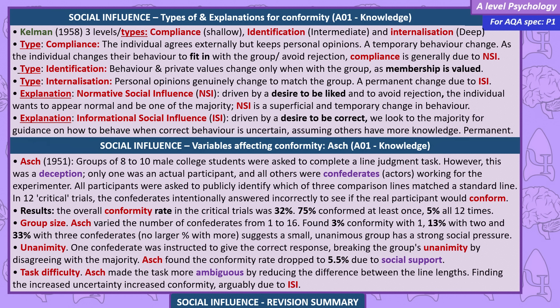Asch, 1951. Groups of 8 to 10 male college students were asked to complete a line judgment task. However, this was a deception — only one was an actual participant, and all others were confederates, actors working for the experimenter. All participants were asked to publicly identify which of three comparison lines matched the standard line. In 12 critical trials, the confederates intentionally answered incorrectly to see if the real participant would conform.